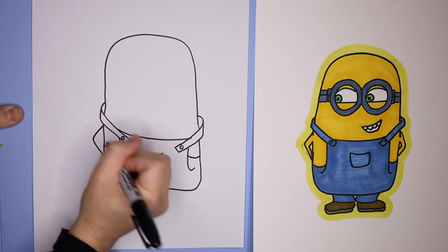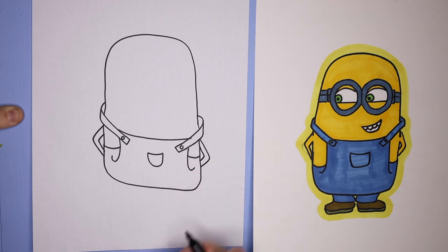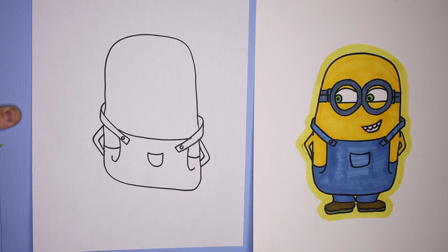Then for the arms, we're gonna make these boomerang shapes, so it's almost like arrows. We're gonna go out and then in, out and then in. But you can do your hands however you'd like. If you want to make it waving, you can definitely do that.